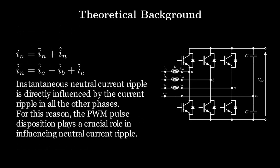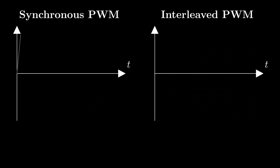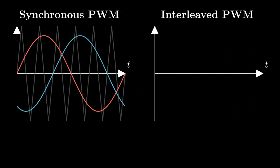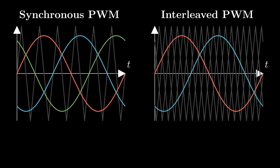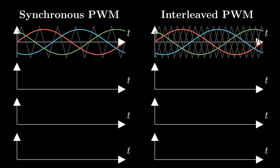Clearly, PWM pulse disposition can influence this summation in a constructive or destructive way. The two most popular PWM techniques for split capacitor inverters are synchronous and interleaved PWM. The first compares each modulating signal against a unique carrier, while the second presents three carriers associated with each phase. The fundamental AC component is the same for both techniques, but the ripple is modified by the different PWM pulse dispositions.